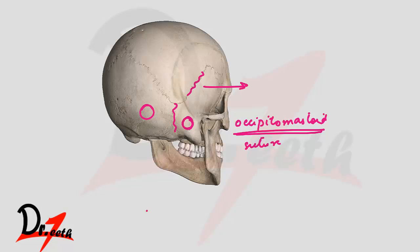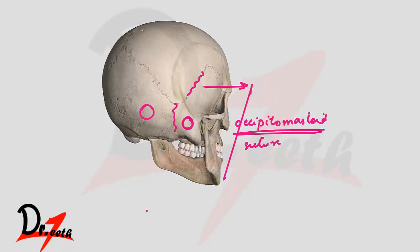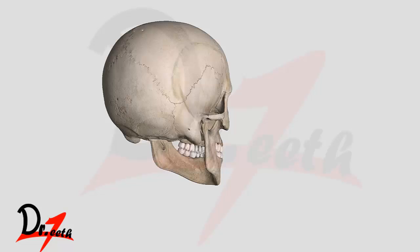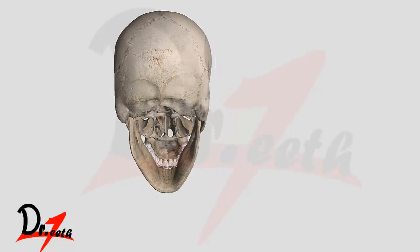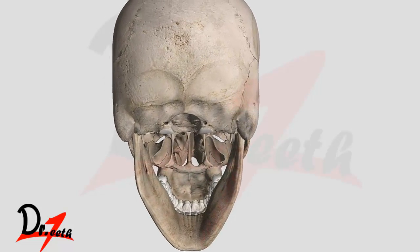That suture is called the parietal mastoid suture. Now let's get back to the posterior aspect.